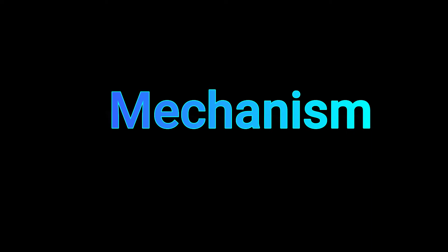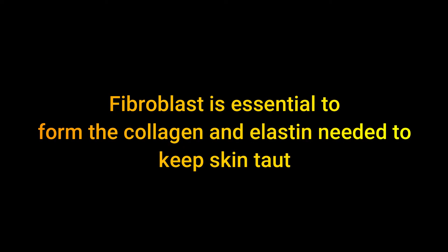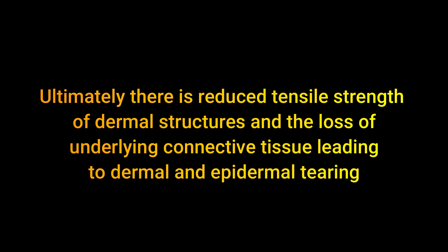So what is the underlying mechanism of striae in Cushing syndrome? In Cushing syndrome there is excess cortisol, which is thought to cause a catabolic effect on fibroblasts. Fibroblasts are essential to form collagen and elastin to keep the skin taut. As there is a deficit of fibroblasts...